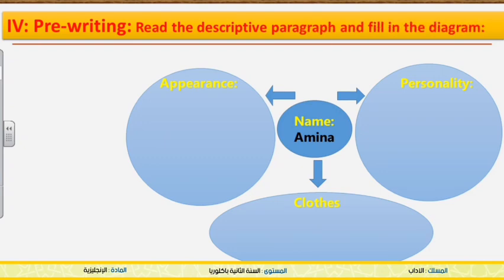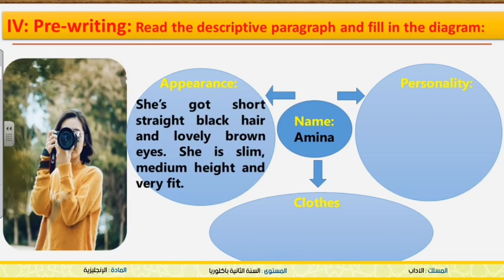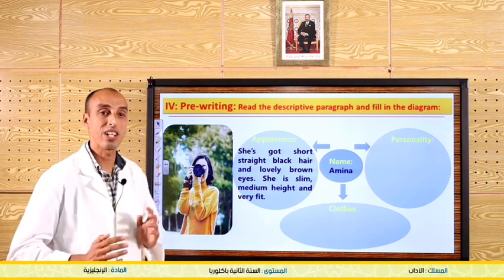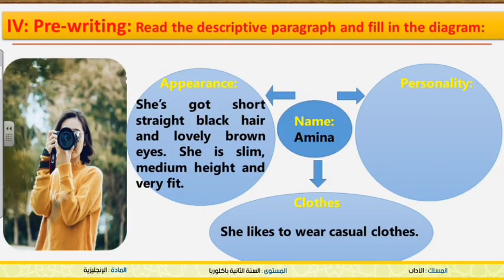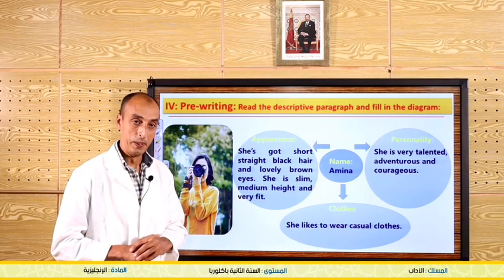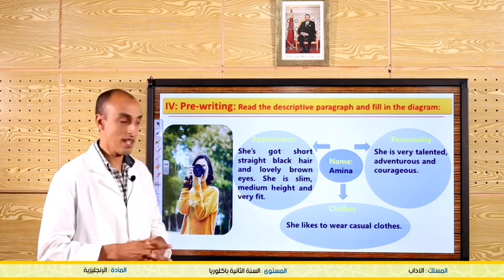Concerning the appearance: she's got short, straight, black hair and lovely brown eyes. She is slim — she's not fat. Medium height, so she's not very tall and not very short — and very fit because she practices sport. Now concerning clothes, she likes to wear casual, everyday clothes. What about her personality? She is very talented, adventurous, and courageous. These are the main points of description mentioned in the paragraph.